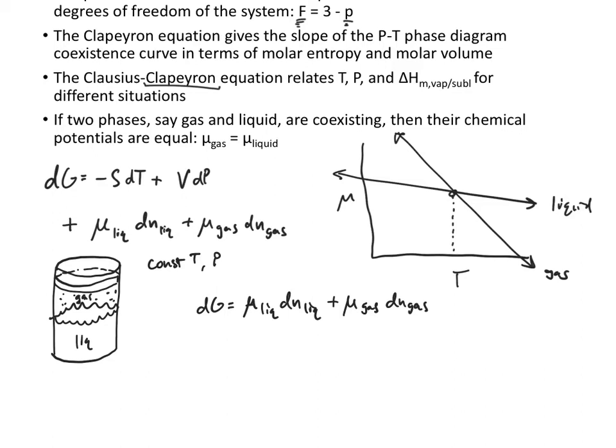All right, if we assume that the system is at equilibrium, then that means changing the number of moles of liquid or changing the number of moles of gas, either one will not decrease the Gibbs free energy.